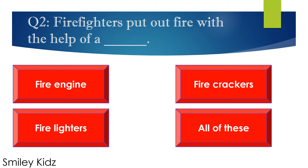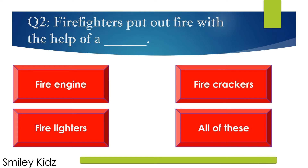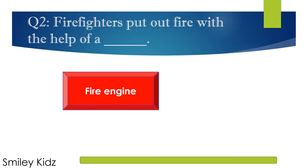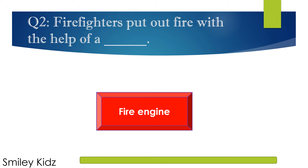Question number 2. Firefighters put out fire with the help of a? Options are A. Fire engine, B. Firecrackers, C. Fire lighters, and D. All of these. Your time starts now. The right answer is fire engine. Firefighters put out fire with the help of a fire engine.